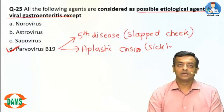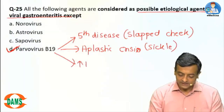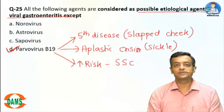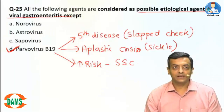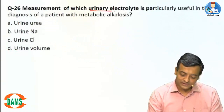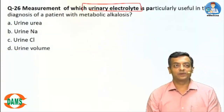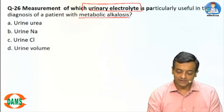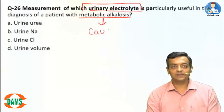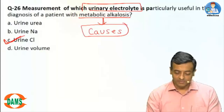Parvo B19 may also increase the risk of systemic sclerosis. It is not associated with diarrhea, making it option D. Question 26: Measurement of which urinary electrolyte is particularly useful in the diagnosis of metabolic alkalosis? In metabolic alkalosis, the causes are based on urine chloride level.